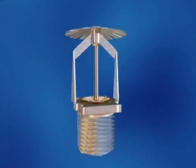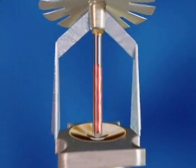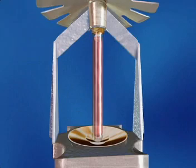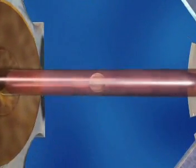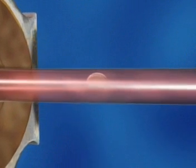The valve seal is retained by a glass bulb which contains a liquid that has a high coefficient of expansion. A small measured quantity of vapor remains trapped when the bulb is hermetically sealed.